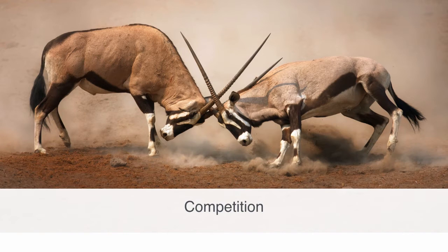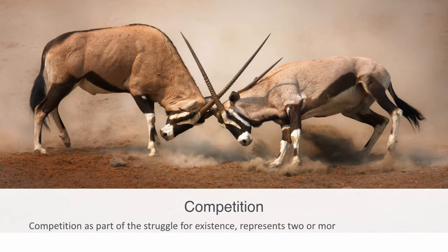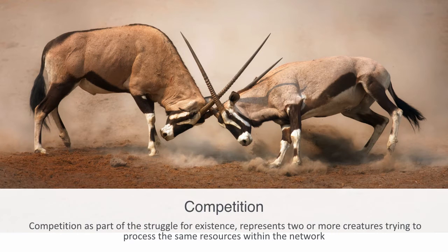When two or more organisms' niches overlap, or they strive for the same resource, we may get a biological interaction of competition — a negative interaction between individuals or populations due to resource constraints. Competition represents two or more creatures trying to process the same resources within the network. Since Darwin, many biologists believe that competition has promoted biological evolution under natural selection. According to the competitive exclusion principle, species less suited to compete for resources should either adapt or die out.